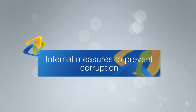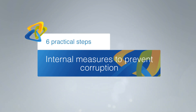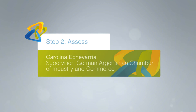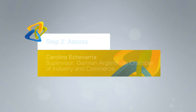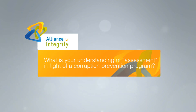Internal measures to prevent corruption — six practical steps. Step 2: Assess. An interview with Carolina Achiva, supervisor at the Argentinian Chamber of Industry and Commerce. What is your understanding of assessment in the light of a corruption prevention program?